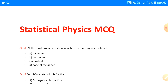Question number one is: at the most probable state of a system, the entropy of a system is? We are understanding these questions so that if one or two questions come, we can answer them. The most probable state is the state which the system most occupies — it is the equilibrium state.